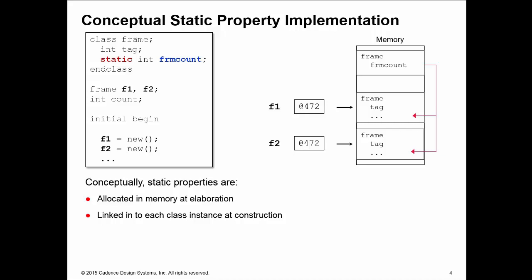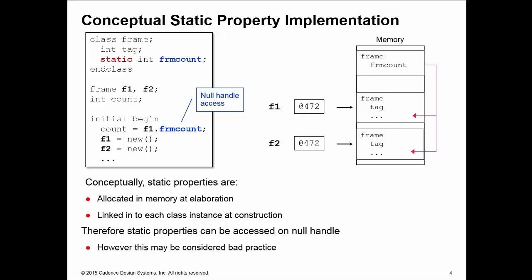Now an interesting side effect of pre-allocating these static properties is you can access the static property from a null handle without having an instance of the frame class. Now this is occasionally considered to be bad practice because we don't want to access stuff from a null handle. It may be better to use a static method to access that property. So let's have a look at static methods.